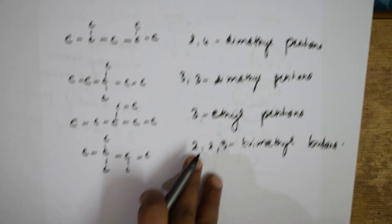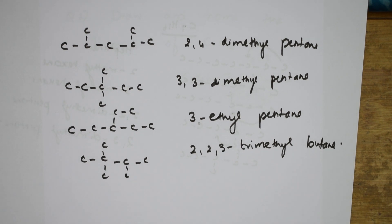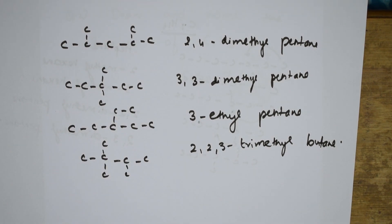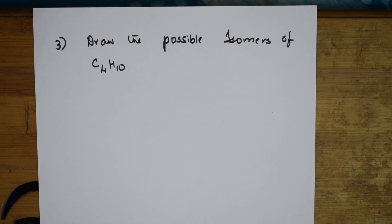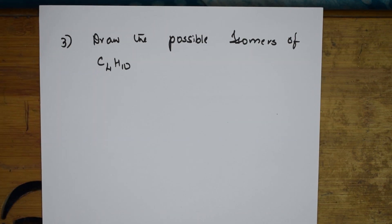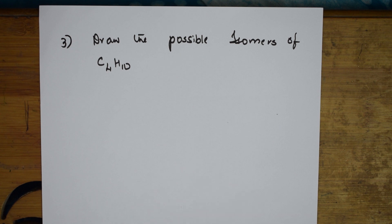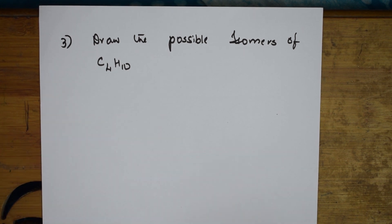So these are all the possible isomers of C7H16. Now they've asked me to write the possible isomers for C4H10. C4H10 is nothing but butane. It's a very basic thing — let's start.